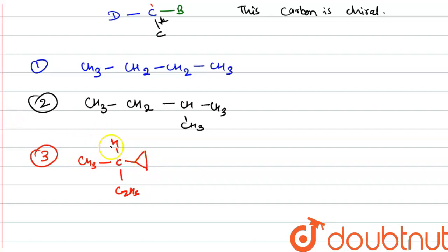As you can see, this carbon is attached with four different groups. So this is a chiral carbon, denoted by asterisk.